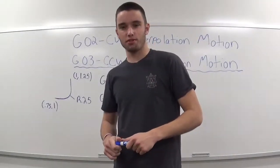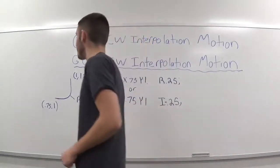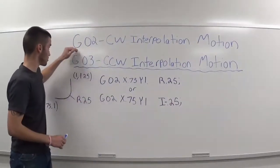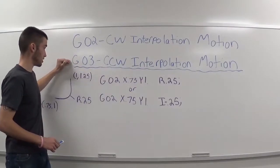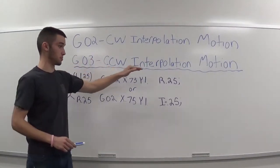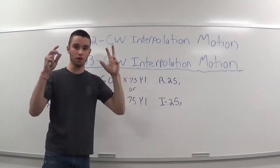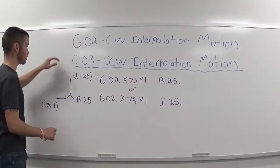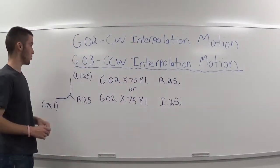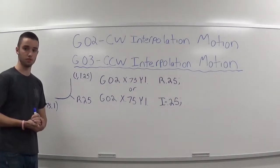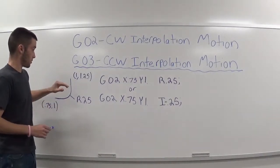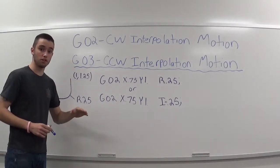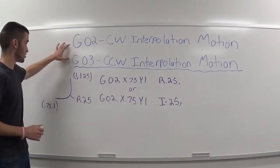In this lesson, we'll be going over G02 and G03. G02 is your clockwise interpolation motion, and G03 is your counterclockwise interpolation motion. Fancy words for arcs. G02 and G03 are both modal commands and they both fall under the same group as G00 and G01. I'll be going over a couple of examples in this video on how to use G02 and G03.